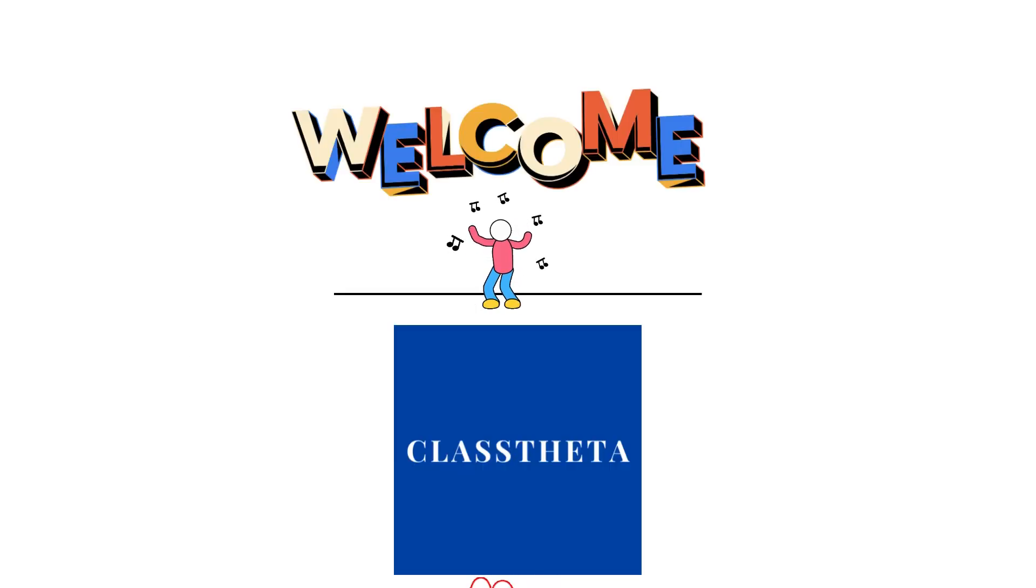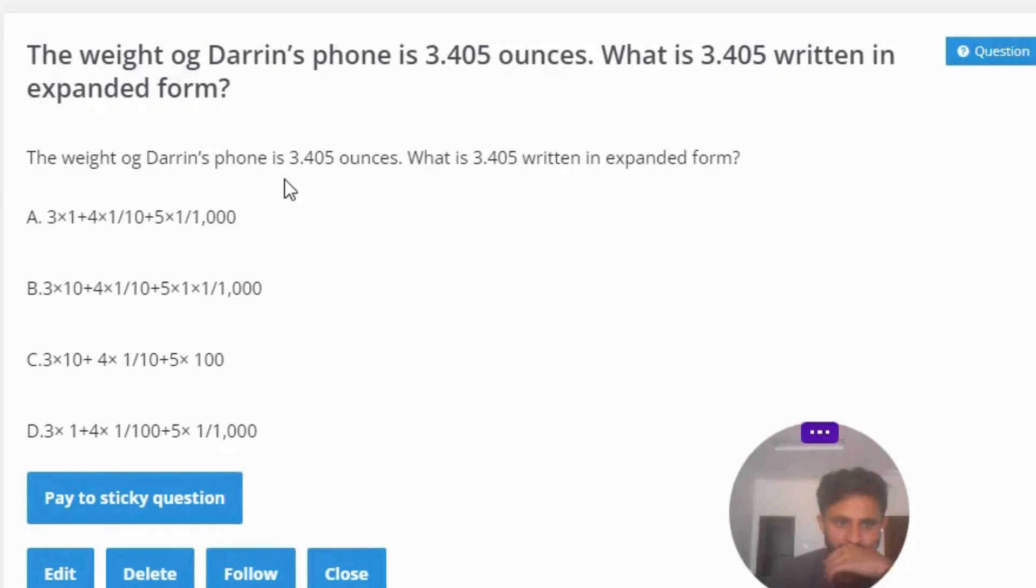Today's question is: The weight of Darrin's phone is 3.405 ounces. What is 3.405 written in expanded form?